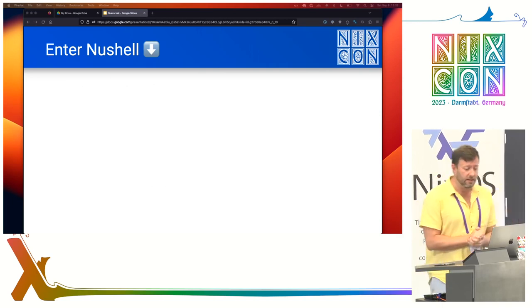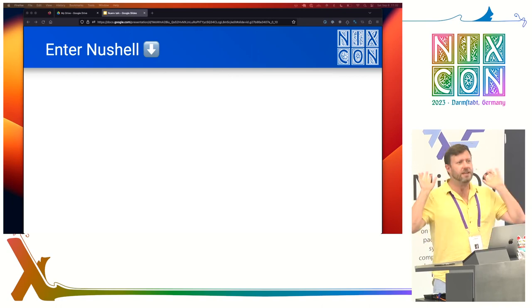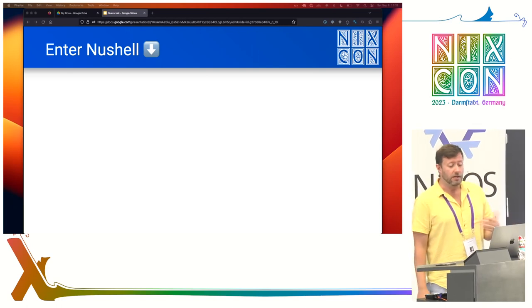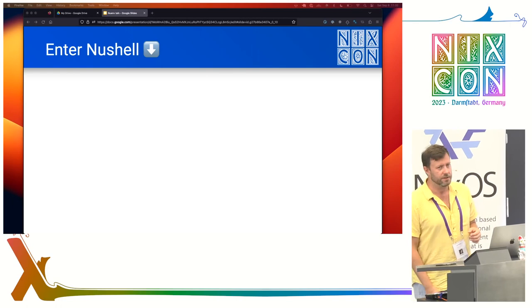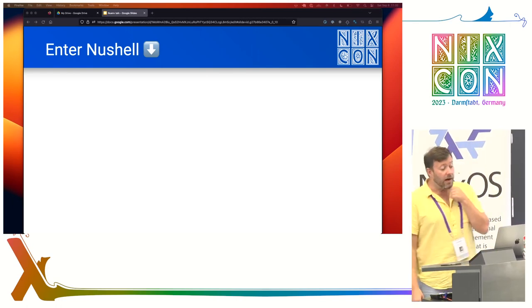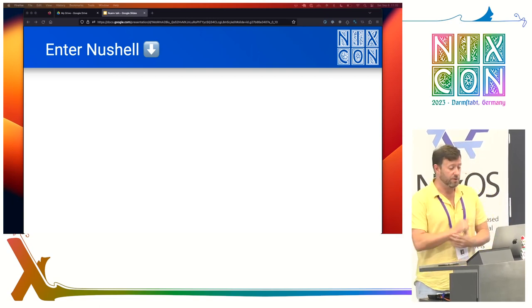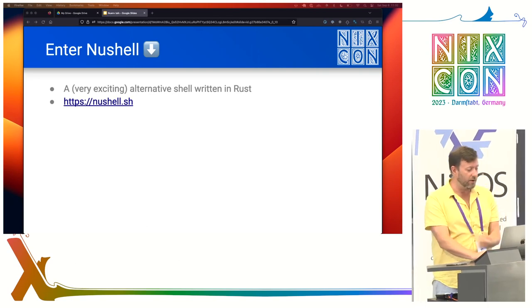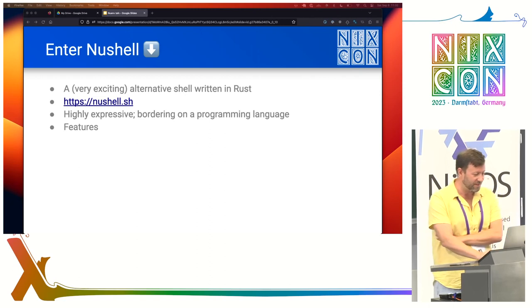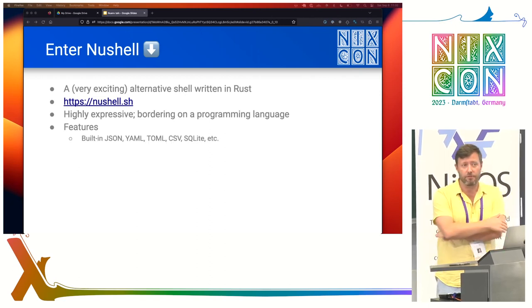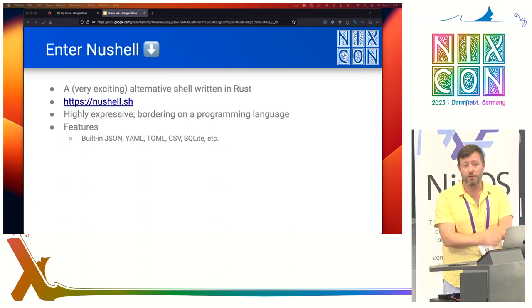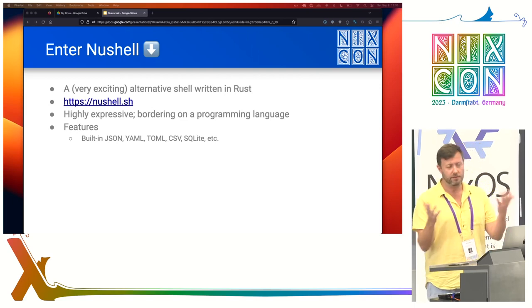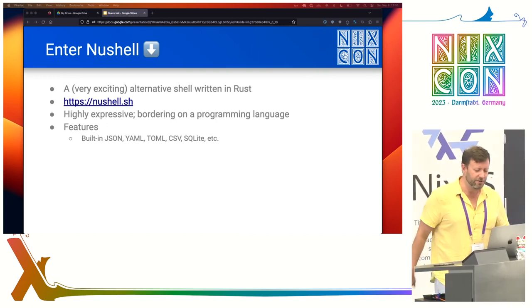Nu Shell is a recent experimental shell written in Rust that seeks to go pretty decisively beyond Bash and open up a new paradigm. I say experimental because it's pre-1.0, still under very heavy development, constantly having breaking changes. So make sure to pin your versions. I strongly encourage you to try it out because I think it's really remarkable. Some notable features: it has built-in support for common data formats like JSON, YAML, TOML, CSV, and even niche things like SQLite and data frames. That means you can toss out utilities like jq and the YAML equivalent.